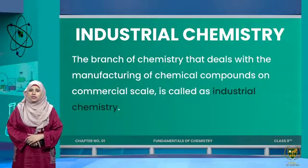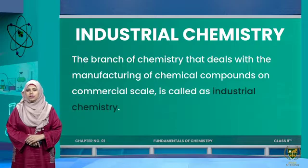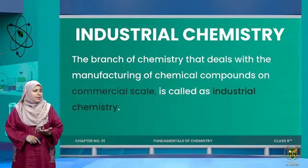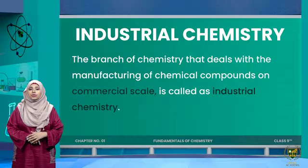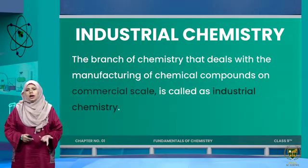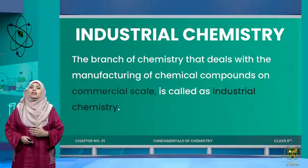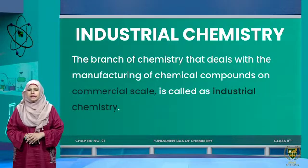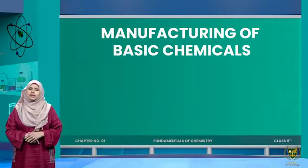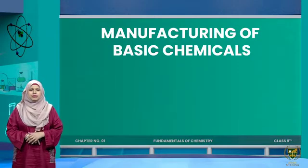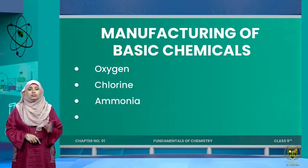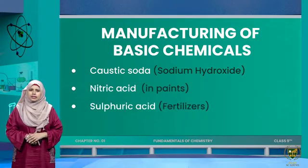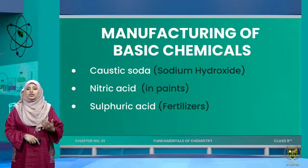The branch of chemistry that deals with the manufacturing of chemical compounds on a commercial scale is called industrial chemistry. Commercial scale means making for profit, and it is always large-scale, requiring large industries and large equipment. Some basic chemicals that come under industrial chemistry include oxygen, chlorine, ammonia, hydrogen peroxide, caustic soda (sodium hydroxide), nitric acid, and sulfuric acid.